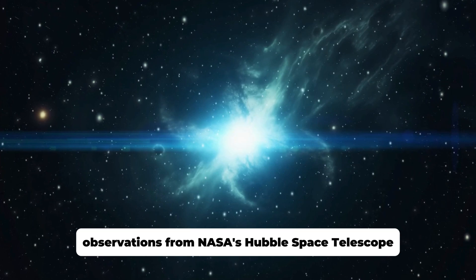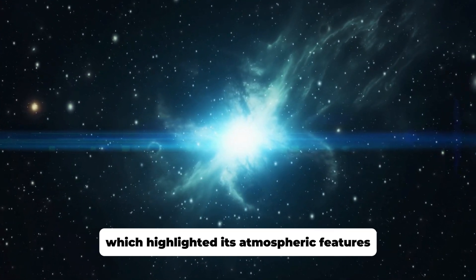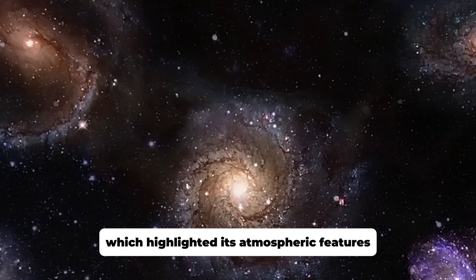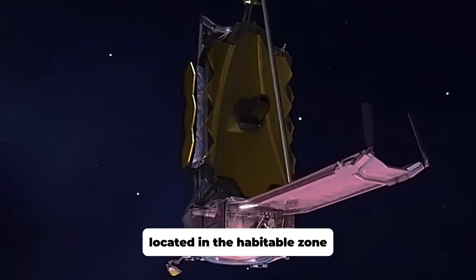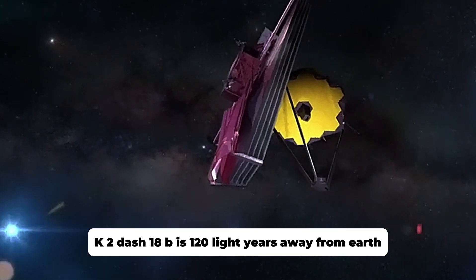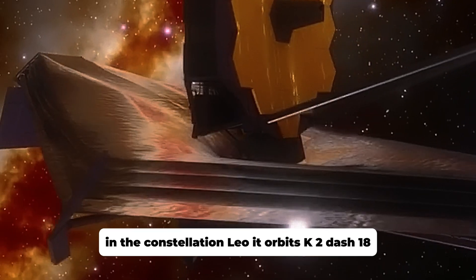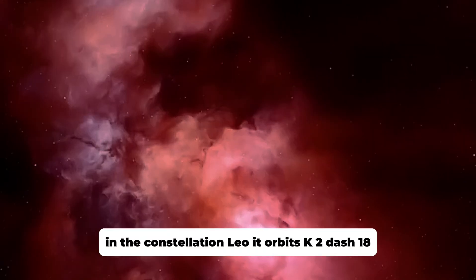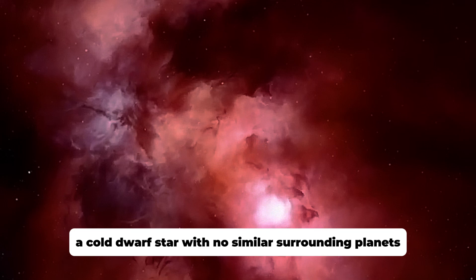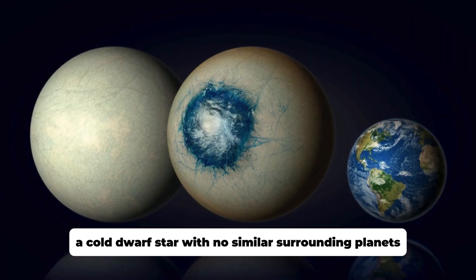Our understanding of this exoplanet has greatly expanded, thanks to initial observations from NASA's Hubble Space Telescope, which highlighted its atmospheric features. Located in the habitable zone, K2-18b is 120 light-years away from Earth in the constellation Leo. It orbits K2-18, a cold dwarf star with no similar surrounding planets.